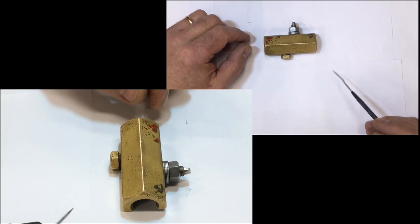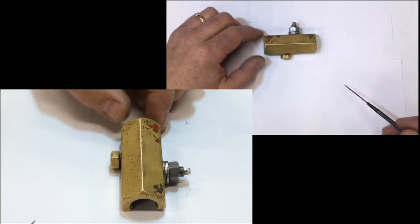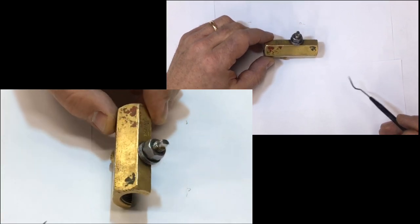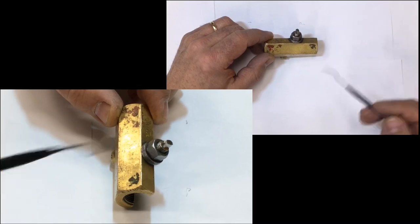What we have here is a variable restrictor type flow control, non-pressure compensated. You can see the variable orifice right here on top, the threads with the nut.